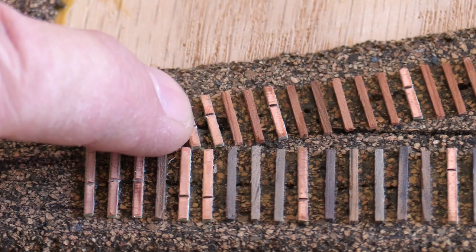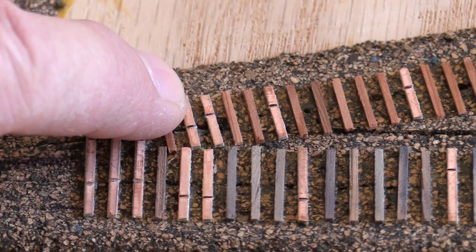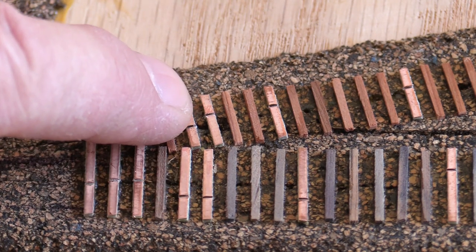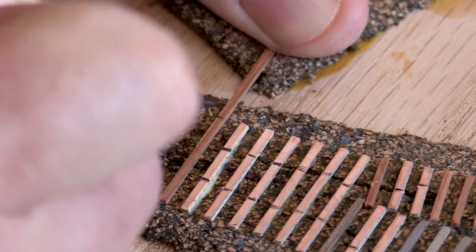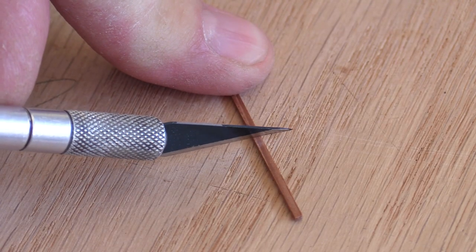After some thought, I replaced a few of the wood ties with PC board ties. This is for some support in areas where I'll need to cut gaps in the rails later. It's better to have a few extra PC board ties than not have enough. The wooden turnout ties can be cut with a hobby knife.